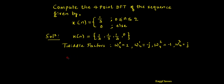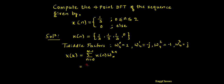Now I can write the expression: X of k, which is the DFT of this sequence, is equal to the summation from n=0 to N-1 of x(n) times W_N to the power k·n, where both k and n vary from 0 to N-1. Putting N equal to 4: summation from n=0 to 3 of x(n) times W4 to the power k·n.